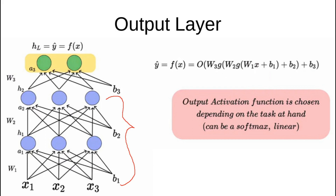This is the output layer. In the first layer, the function is w1x plus b1. The second layer is w2, g of w1x plus b2. W3, g of plus b3.